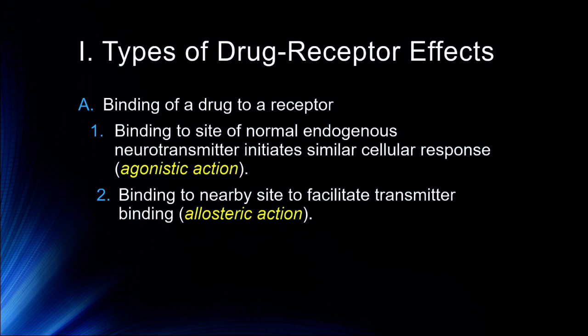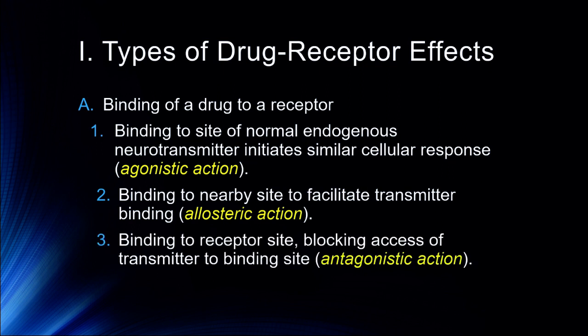For example, a benzodiazepine is an allosteric agonist of GABA because it binds to a nearby site that facilitates the action of the neurotransmitter GABA. You can also have binding to a receptor site that completely blocks access of a transmitter to that binding site — we call this antagonistic action. For example, the drug naloxone, also known as Narcan, blocks access of opioids to the site of their action, acting as a complete antagonist of those opioids, thereby reversing an overdose.